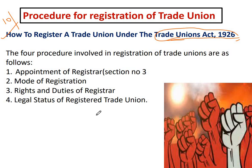इसको मैं बहुत ही अच्छे से समझाऊँगी। सबसे पहले trade union form करने के लिए according to Trade Union Act 1926: पहला है appointment of register, फिर mode of registration, फिर rights and duties of registrar, और then legal status of registered trade union — यह हम एक-एक करके देखेंगे।